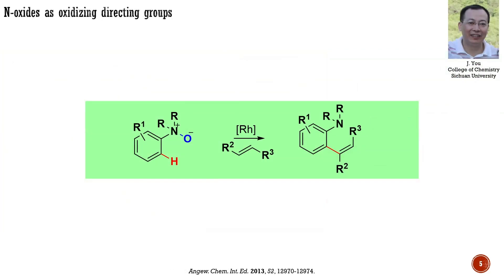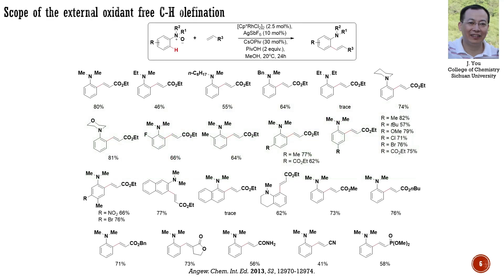Here is an example of a C-H functionalization enabled by an oxidizing directing group. The group of Yu from Sichuan University developed a rhodium-catalyzed, external-oxidant-free, C-H olefination of aniline derivatives. They used aniline N-oxides as the oxidizing directing group. The substrate scope involved various aniline derivatives and different Michael acceptors. Rhodium(III) is involved, so the C-H activation occurs via a concerted metalation-deprotonation sequence, as shown here.